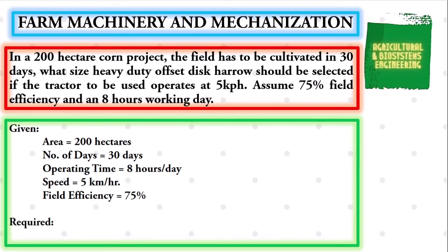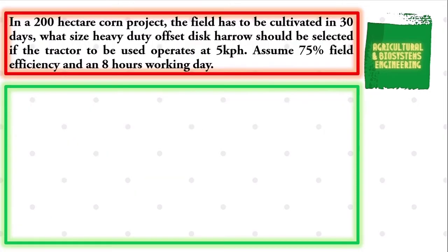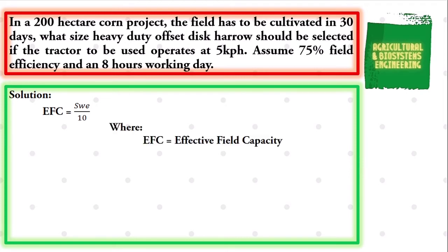The required in the problem is the size of the harrow, symbolized by W. To solve for the size of the harrow we will use the formula: EFC = S × W × E / 10, where EFC stands for effective field capacity, S is the speed in kilometers per hour, and W is the width or size of the implement.